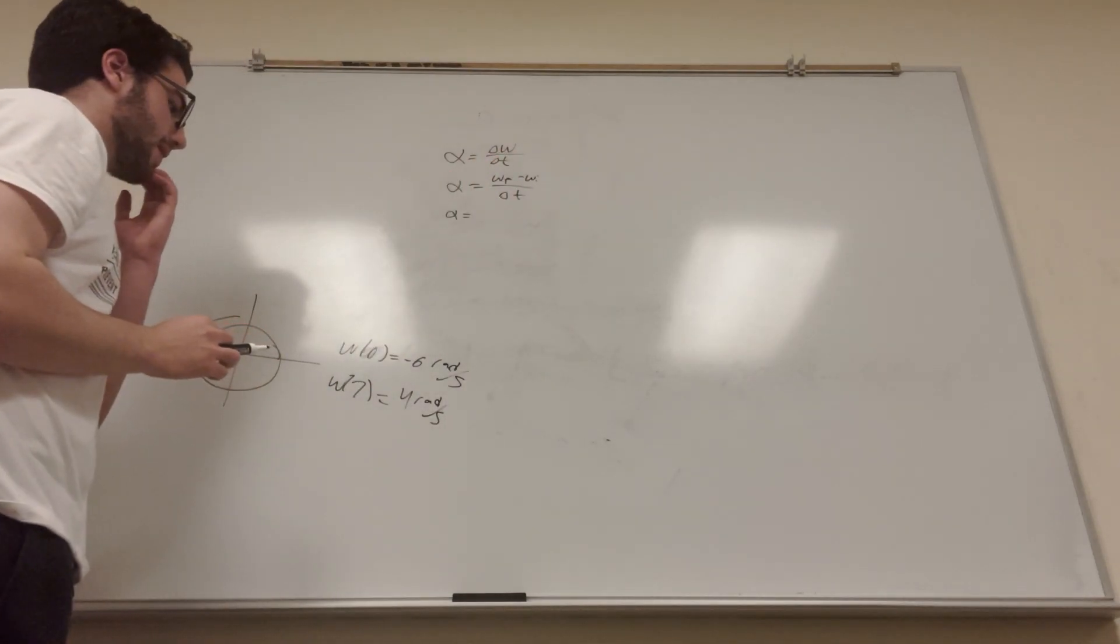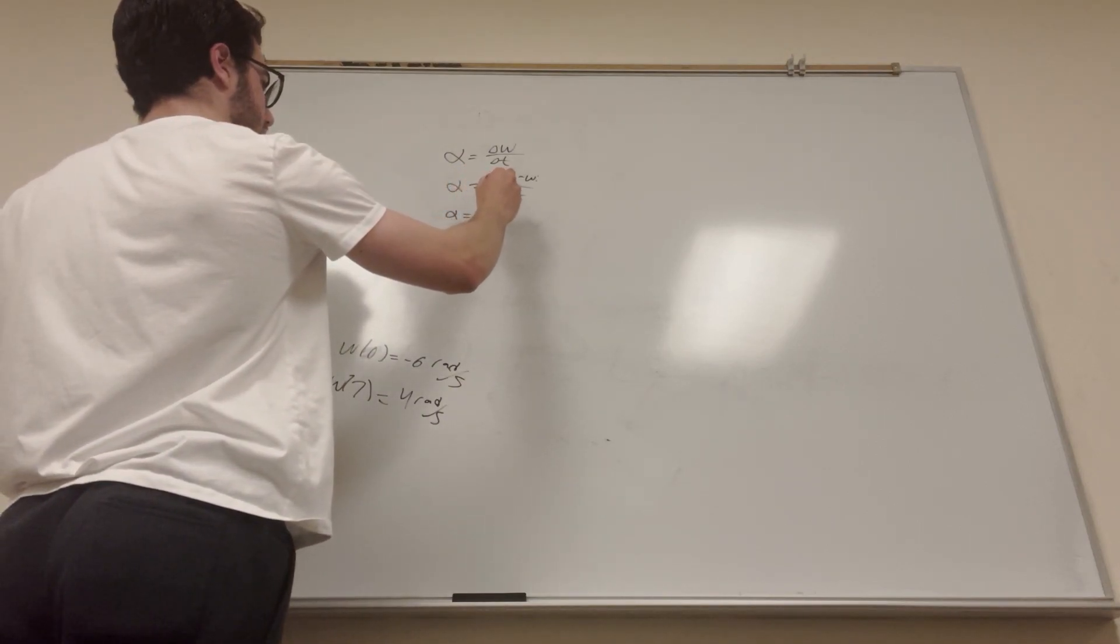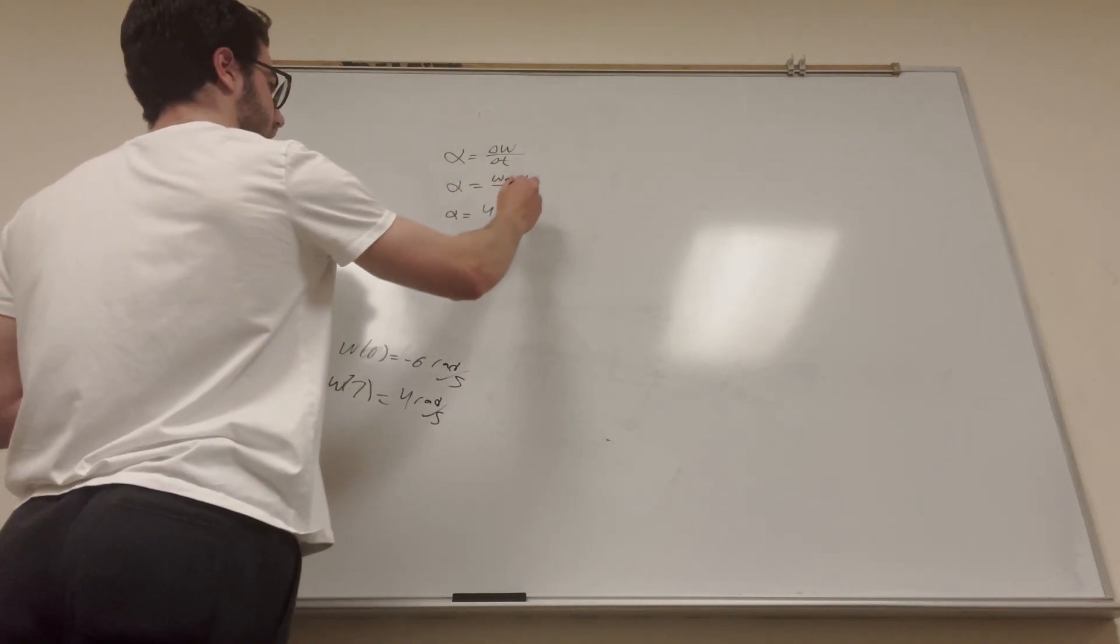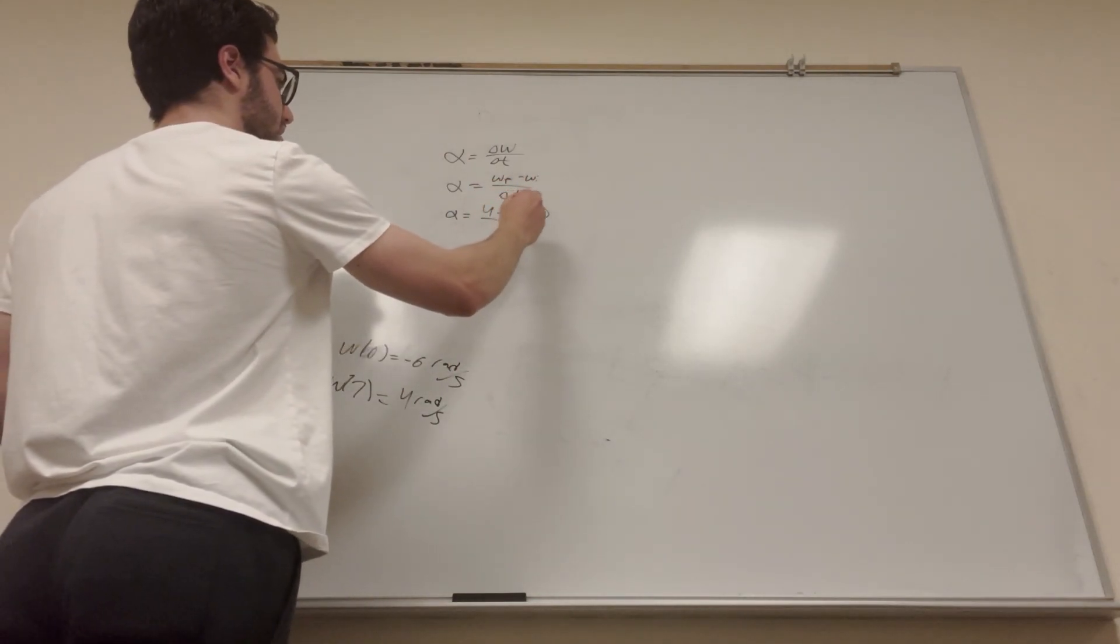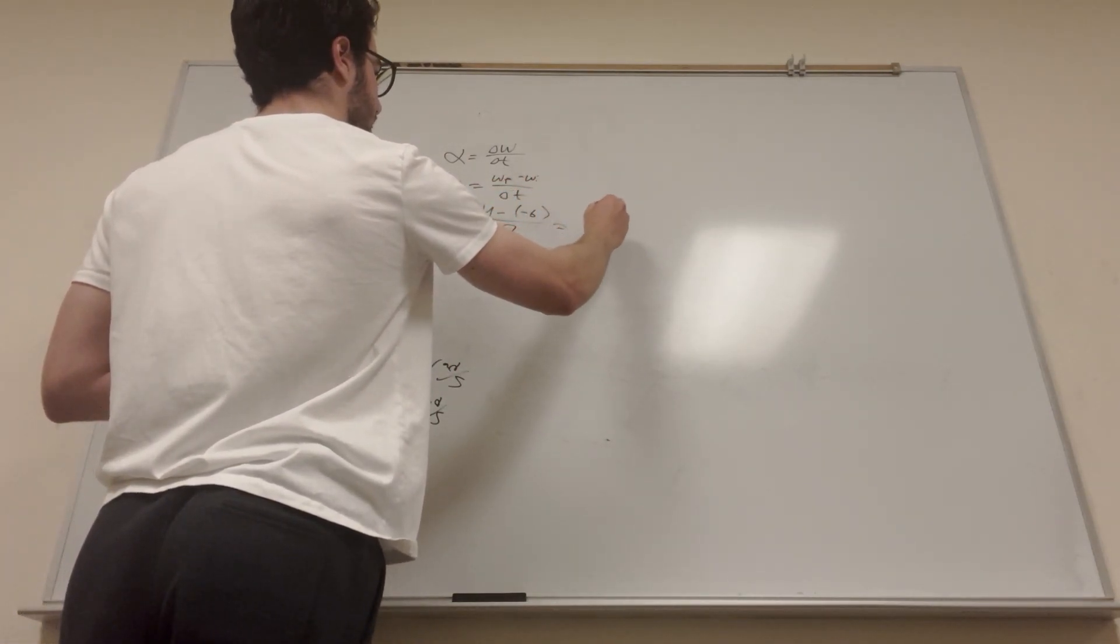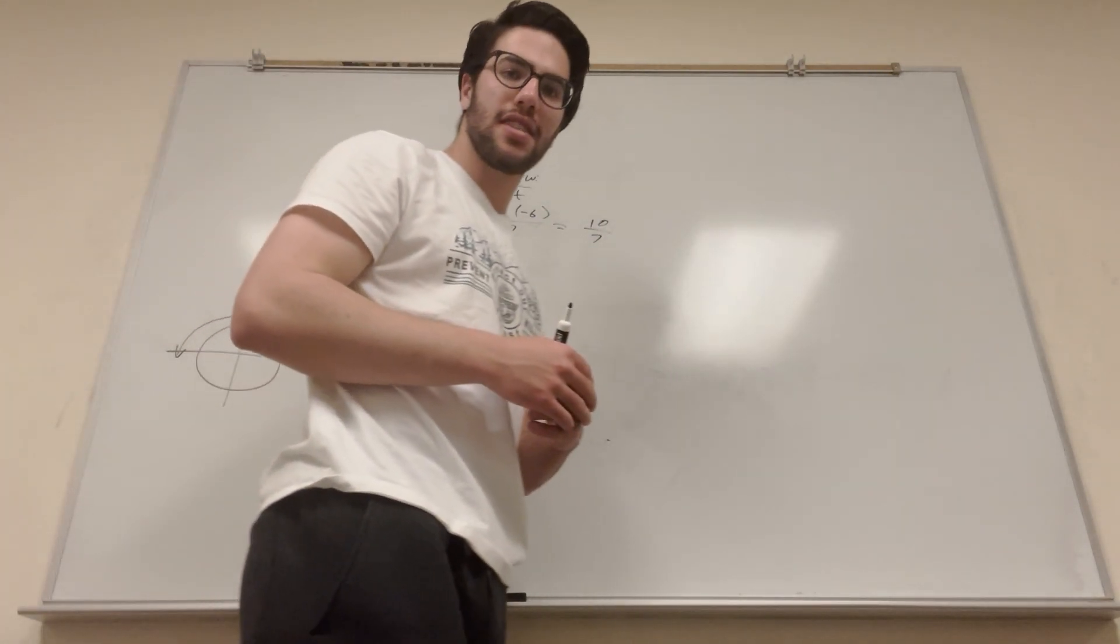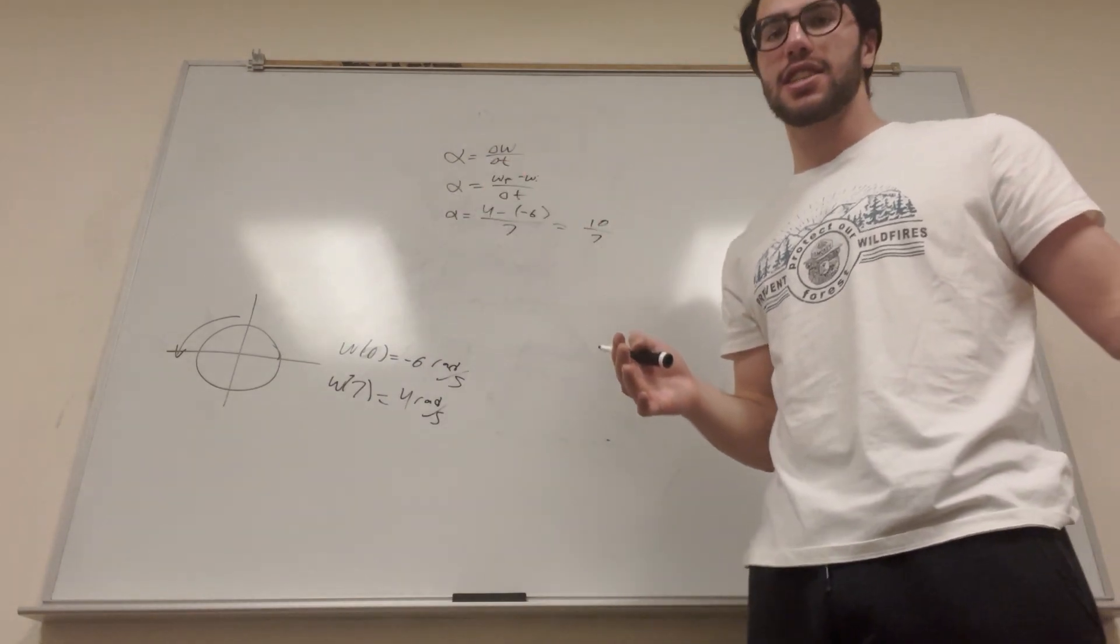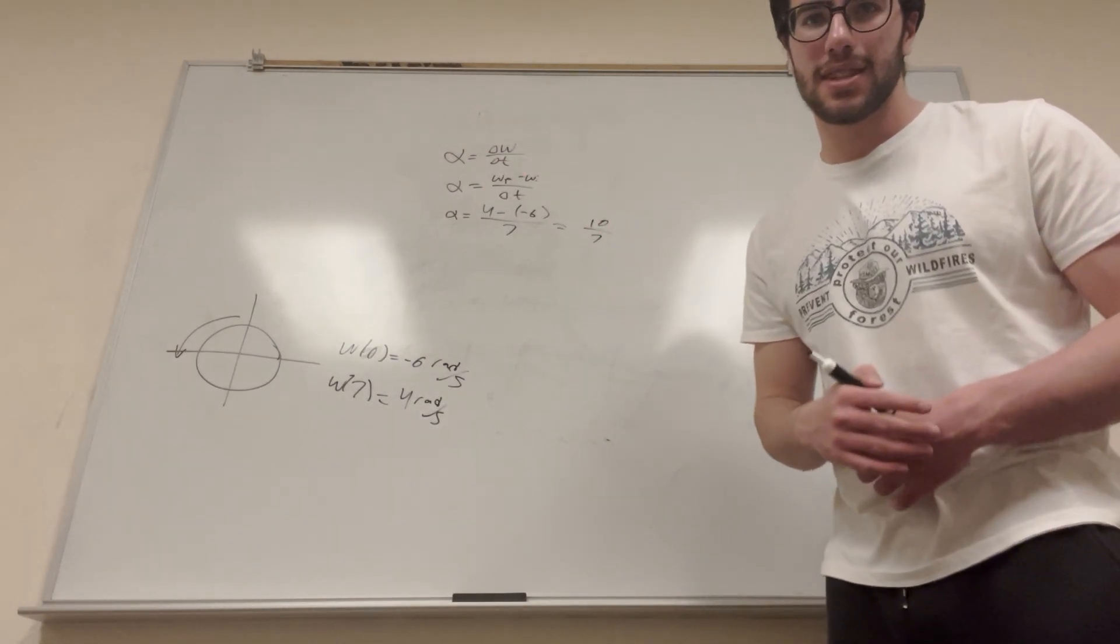So what that's going to be, its final speed is four, and then minus, but then it's going to be negative six. And all of that over, the change in time takes seven seconds. So what that is is ten over seven. So that means its acceleration is positive, and that's good. That makes sense. It's going from a negative velocity to a positive velocity. That means that it's accelerating positively.